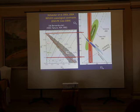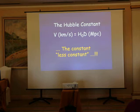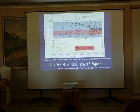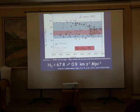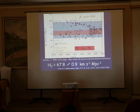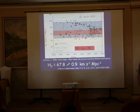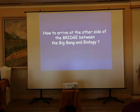The Hubble constant is practically the velocity of the galaxies expanding away from us. I call it the 'less constant' because we have many measurements that are not in agreement. Now we are converging to a range between 55 and 70 km per second per megaparsec, but it is not yet definitively demonstrated.